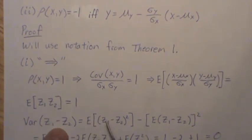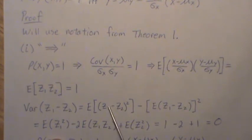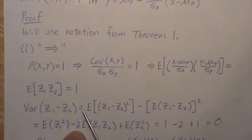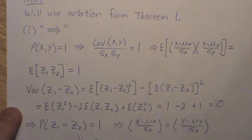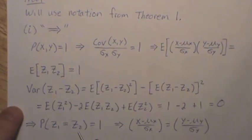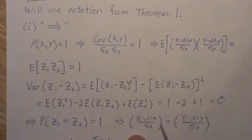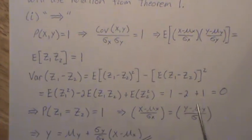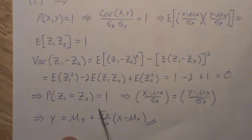Now let's look at the variance of (z1 minus z2). That is the expected value of this squared minus the mean of this quantity squared — but each expected value is 0, so 0 squared is 0 and drops out. Expanding the quadratic and distributing the expected value, we get this is 1, this is 1, and this is minus 2 times 1, which equals 0. So the variance is 0, which implies with probability 1 that z1 equals z2. If z1 equals z2, you can multiply the standard deviation of y over and add the mean of y to get the exact linear relationship between x and y with a positive slope.